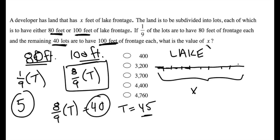So how many total feet of lake frontage am I dealing with? Well, five 80-foot lots, that's 400, and 40 hundred-foot lots, that's 4,000. 400 plus 4,000 gives me 4,400, or D.